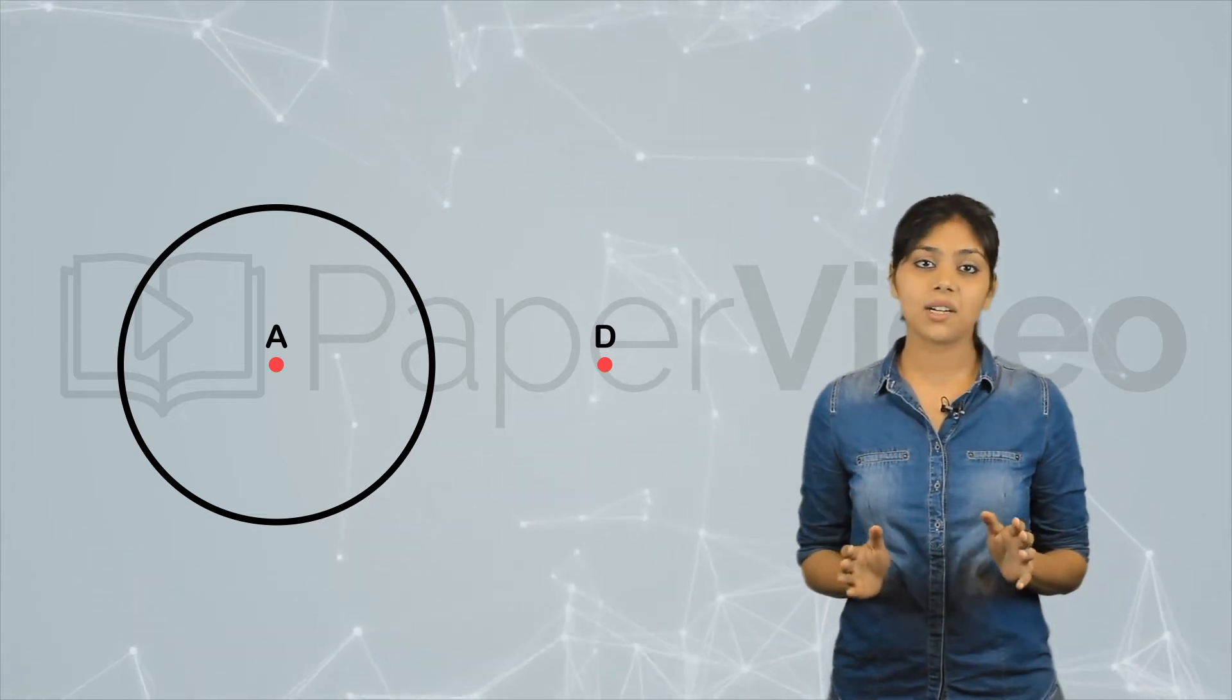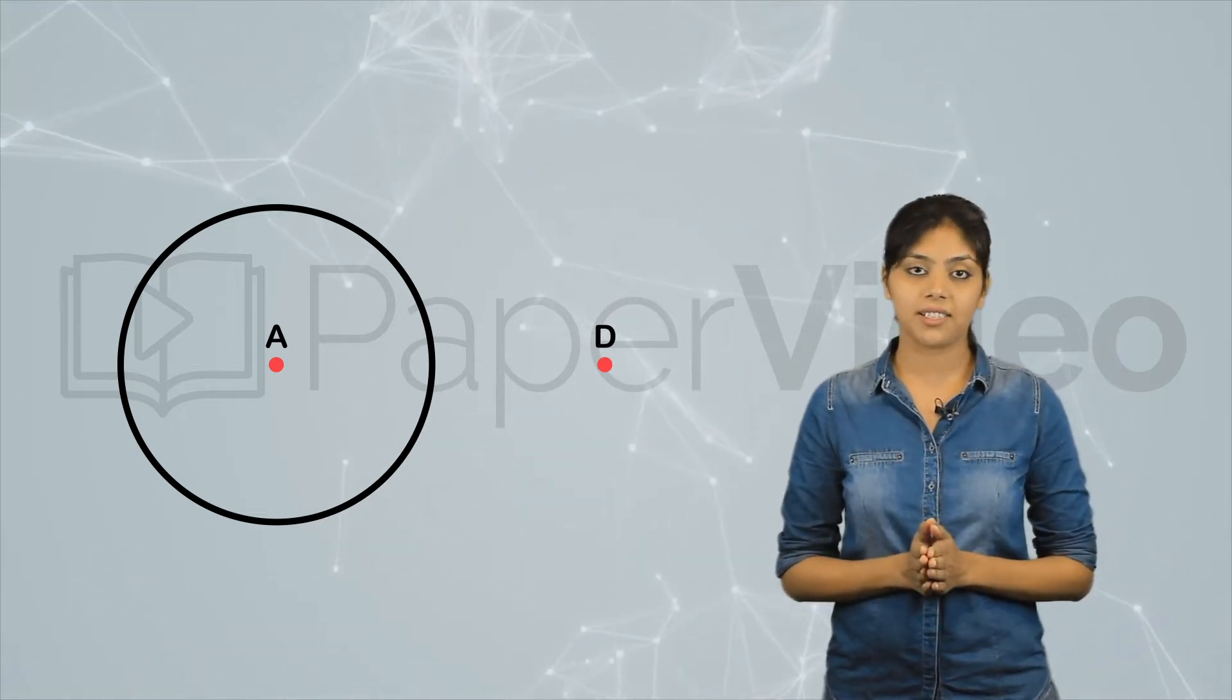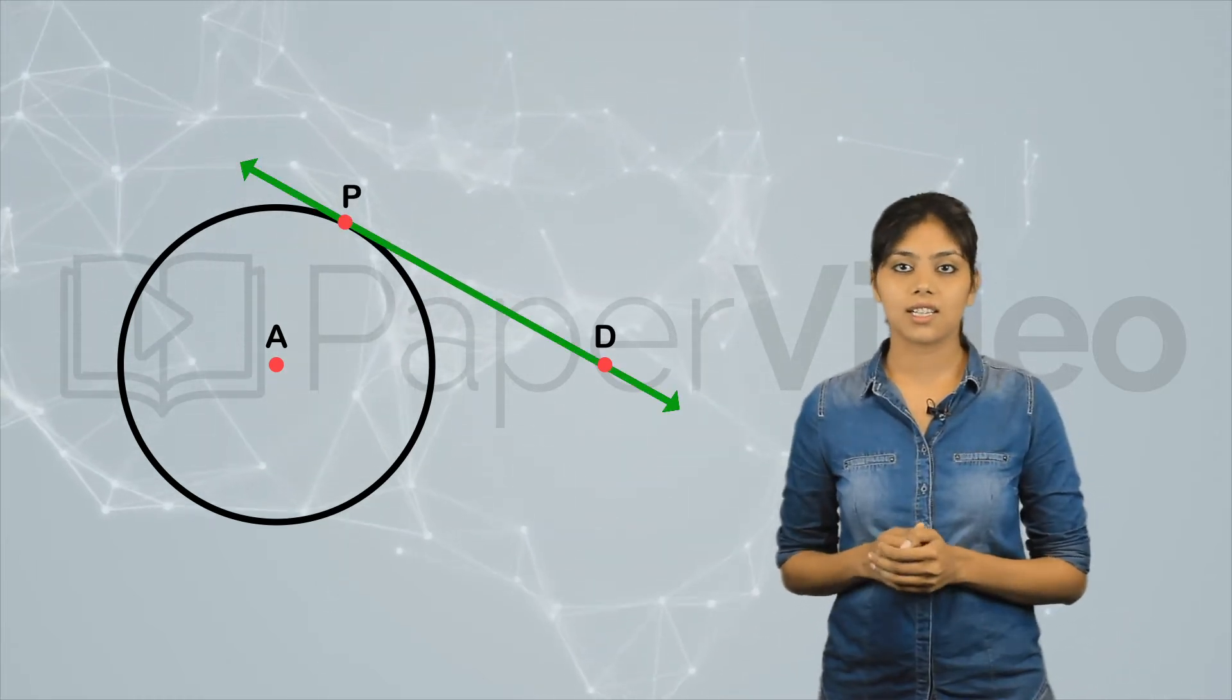We can take any random point in the exterior of the circle. Draw a tangent DP from point D to point P on the circle.